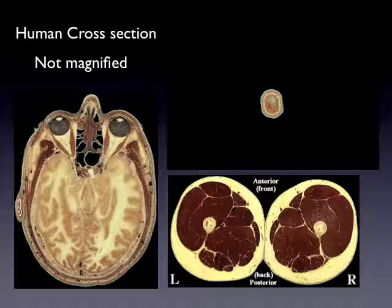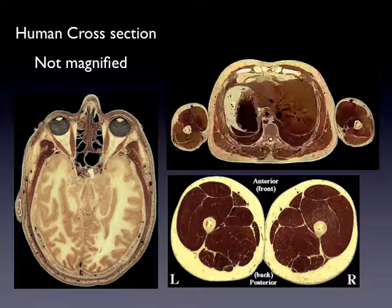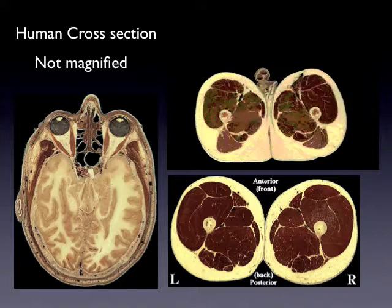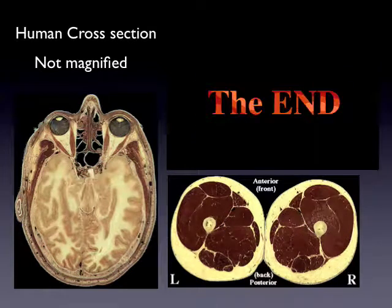Now this is lung tissue. I got these slides from the Victorian Institute of Forensic Medicine — I took six weeks leave and worked at that forensic centre to learn more about forensic science, and they gave me samples from people who died in different circumstances. What you can see here are these air pockets — what do you think those air holes are, where there's nothing, just clear? They are the air sacs, or alveoli. And the larger ones — what could those be?